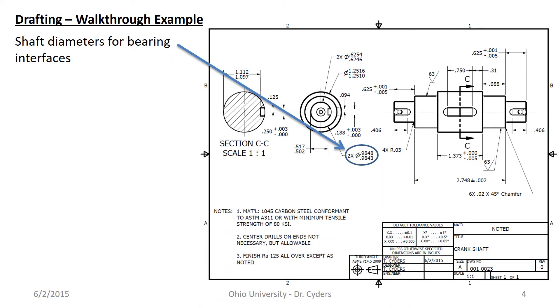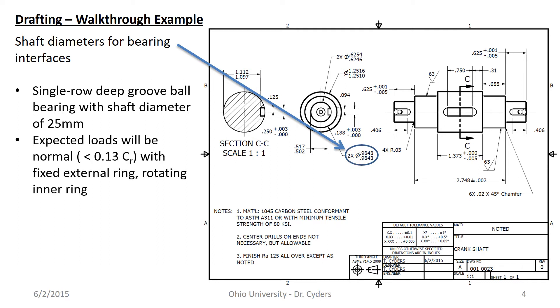So the shaft diameters for the bearing interfaces, I want to press the bearings on as well so these two smooth sections of the shaft here are going to be mounted in bearings. I'm going to be pressing on ball bearings. I want single row deep groove ball bearing with a shaft diameter of 25 millimeters. Because I've drawn this in inches I'm just going to go ahead and express this in inches not in millimeters. 25 millimeters obviously just under one inch proper. The expected loads will be normal with a fixed external ring and rotating inner ring. This is important if you read through the bearing manual and you look up the tolerance section of the technical manual it'll actually tell you what kind of fit to apply.